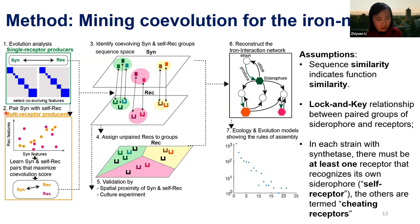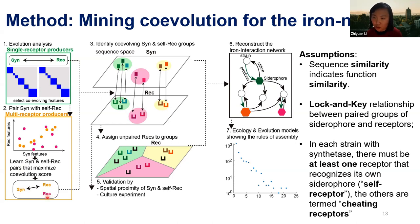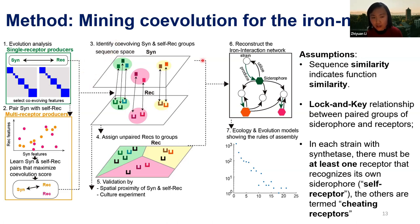The most challenging part is to pair the synthetase with the 'self-receptor'. In a multi-receptor producer, the self-receptor is the one that recognizes the pyoverdine made by its own synthetase and uptakes it; the rest are 'cheating receptors' that are ready to take siderophores made by other subtypes or other strains. Using a coevolution method, we find the right pair by maximizing the coevolution coefficient strength, then apply unsupervised learning to pair synthetases with receptors in two-sequence space.